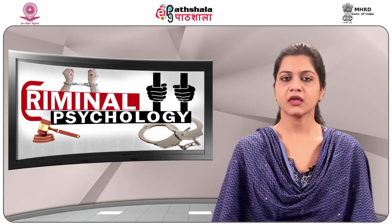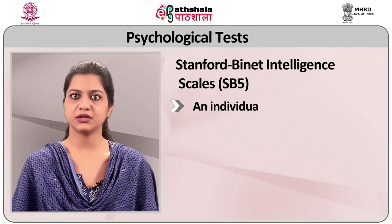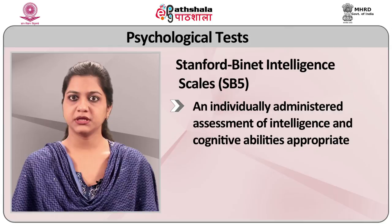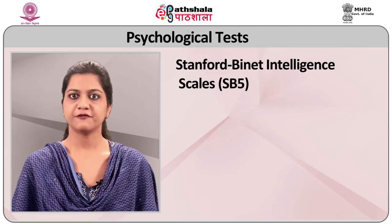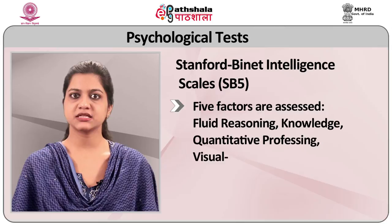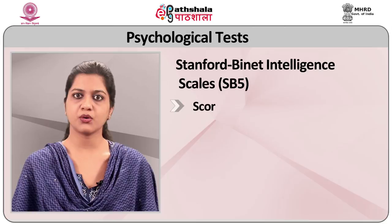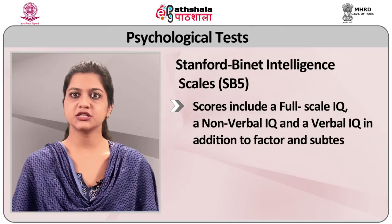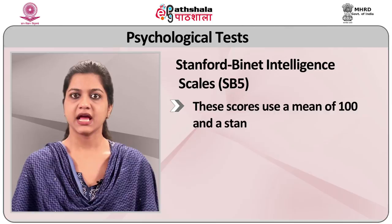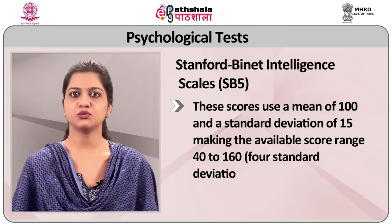SB5: Stanford-Binet Intelligence Scales 5th Edition is an individually administered assessment of intelligence and cognitive abilities appropriate for examinees ages 2 to 85 plus years. Five factors are assessed: fluid reasoning, knowledge, quantitative processing, visual-spatial processing and working memory. Scores include a full-scale IQ, a non-verbal IQ and a verbal IQ in addition to factor and subtest scores. These scores use a mean of 100 and a standard deviation of 15, making the available score range 40 to 160.